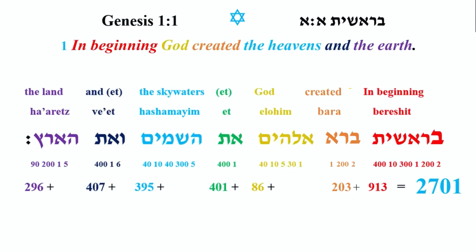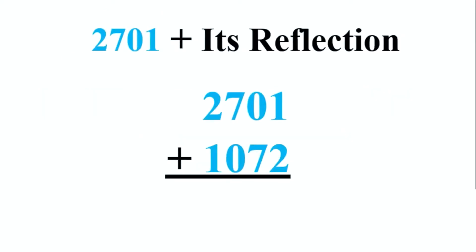2701 is the total gematria of Genesis 1:1. And if we take its reflection, 2701 reflected is 1072, which together gives 3773. So more 3s, more 7s — absolutely amazing perfection here. I love this Yah math.